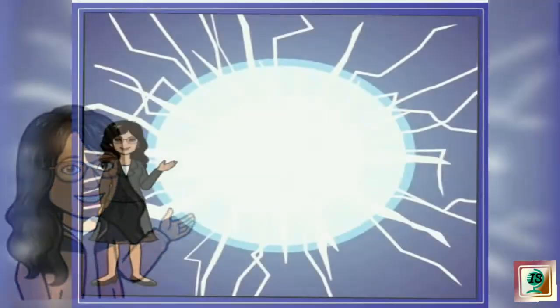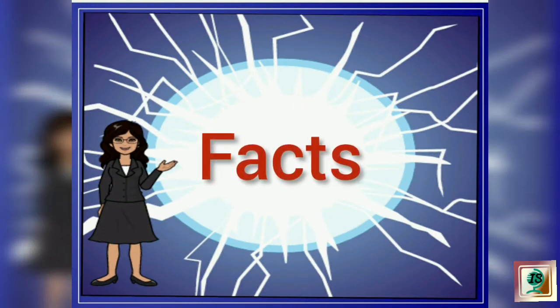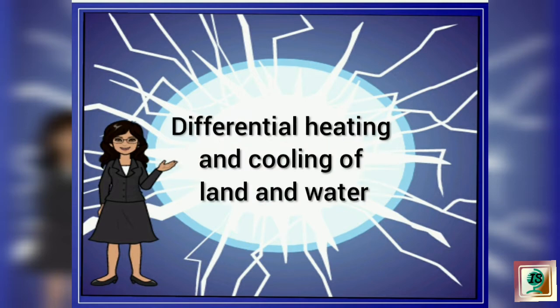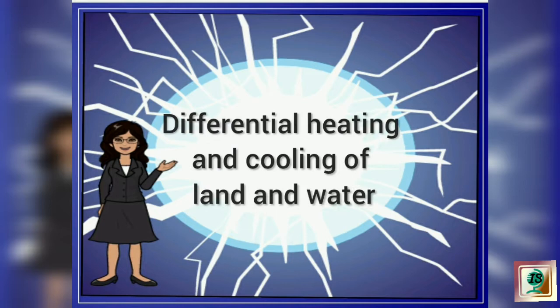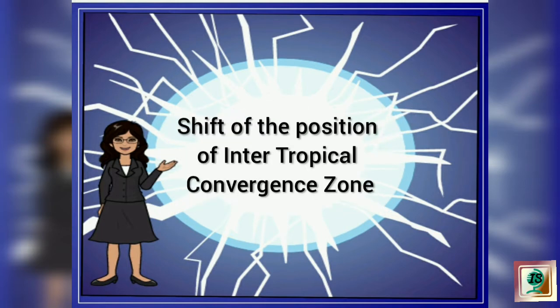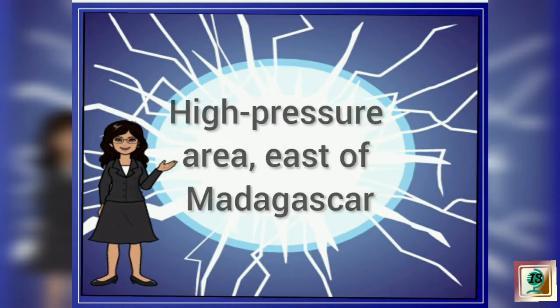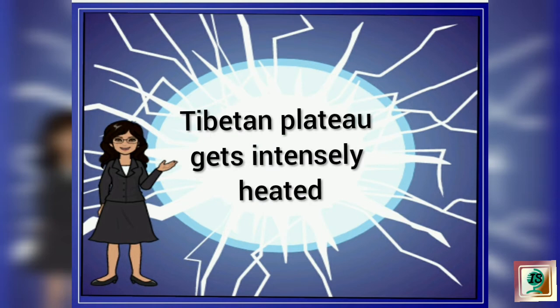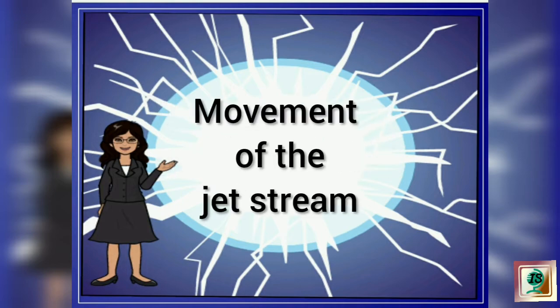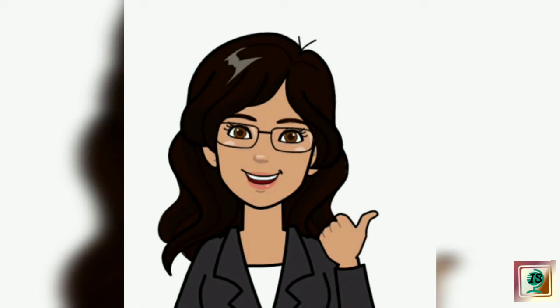To understand the origin and mechanism of monsoons, it is important to know the key facts related to monsoons. They are: differential heating and cooling of land and water, shift of the position of the inter-tropical convergence zone, high pressure area east of Madagascar, the Tibetan plateau gets intensely heated, and movement of jet streams. Let us try to understand each one in detail.